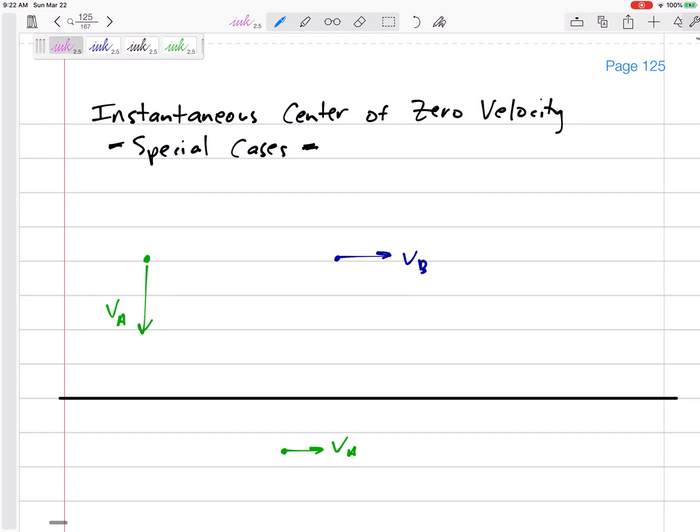What if you find that velocity of B is going this way, velocity of A is going that way? That's the one that we just did, so I would draw my radial lines that are perpendicular to velocities, and there's the instantaneous center.